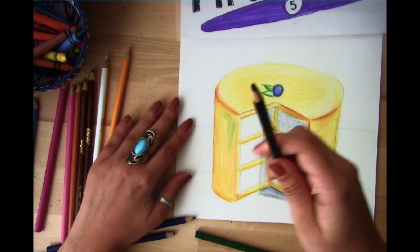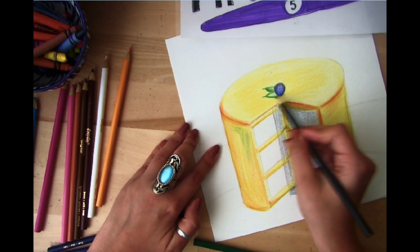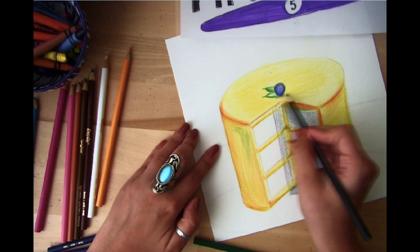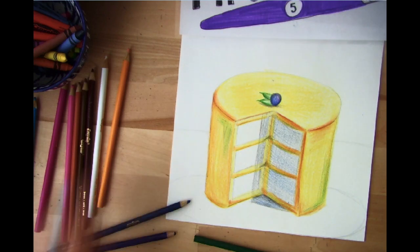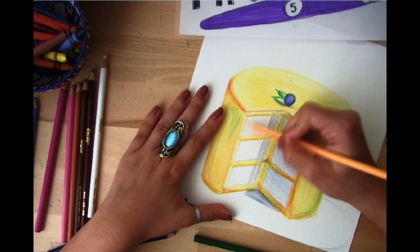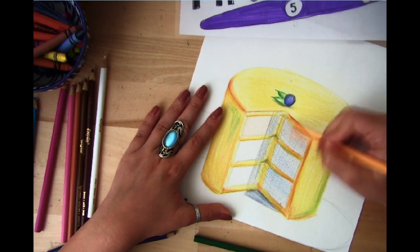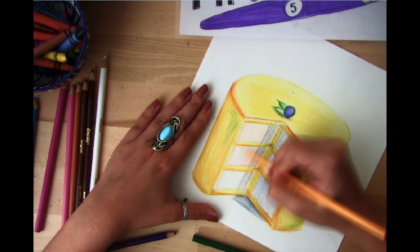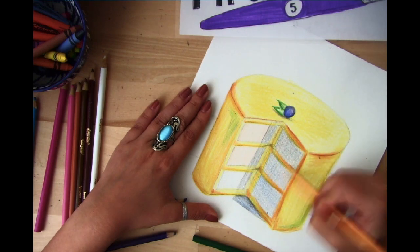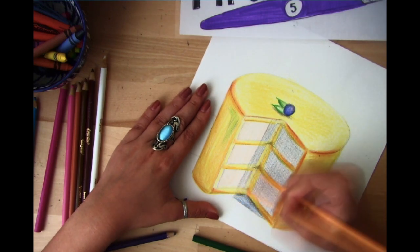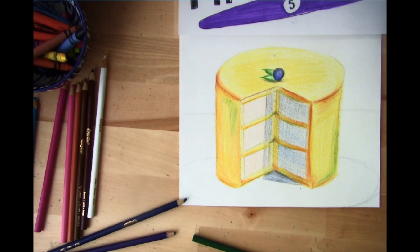I want to take my black colored pencil and cast a little shadow where the blueberry sits on my cake. And there we go. I can take some peach and color these slices peach so they're not just very intense white. There's our cake.